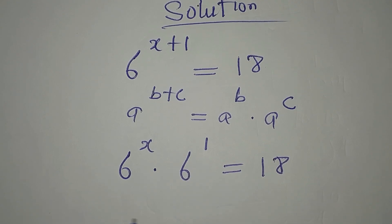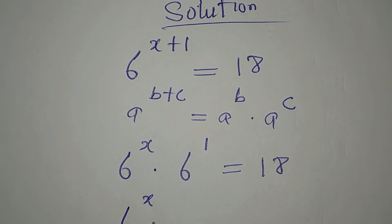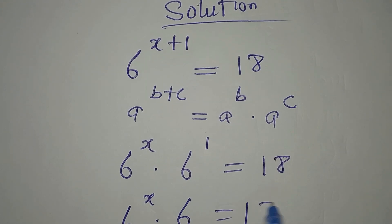And 6 to the power of 1 is the same as 6, so this can be written as 6 to the power of x multiplied by 6 equals 18.